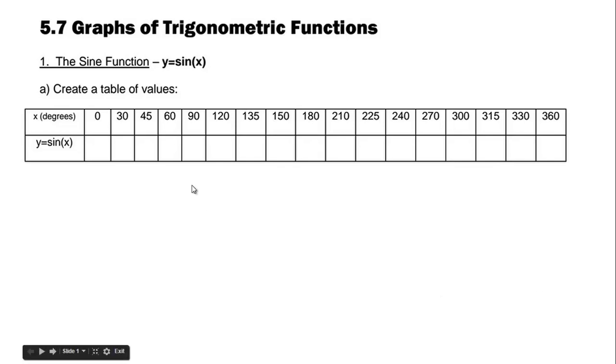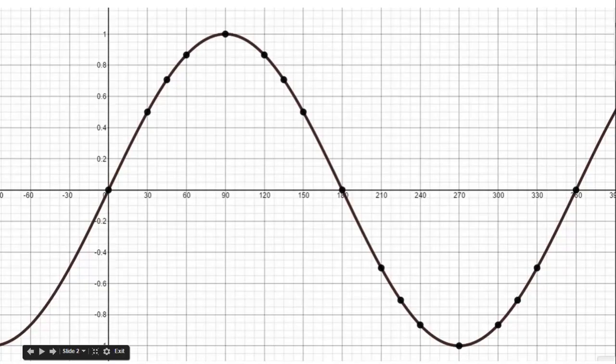So if you actually fill out this table of values and plot the points, we get something that looks like this. These black points here are the actual points, and you really get the pattern that we've been working on all unit, which is seeing how sine goes to one and then it goes back down to zero, and then it's negative between 180 and 360.